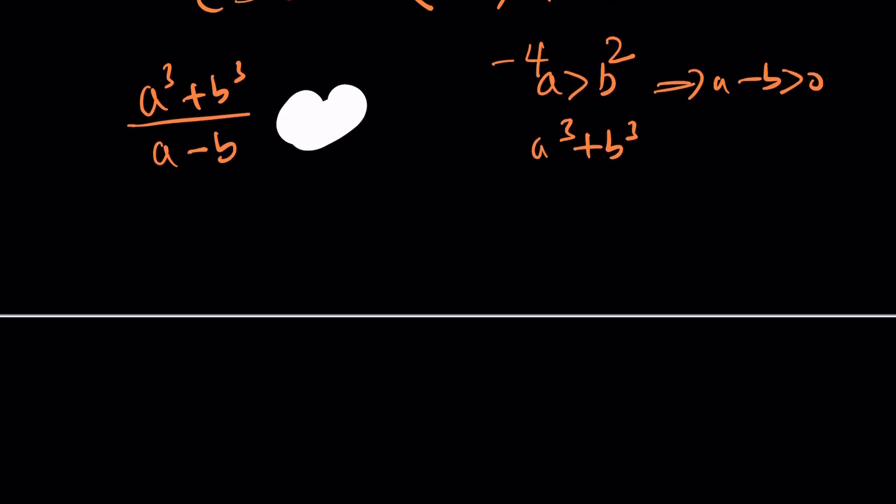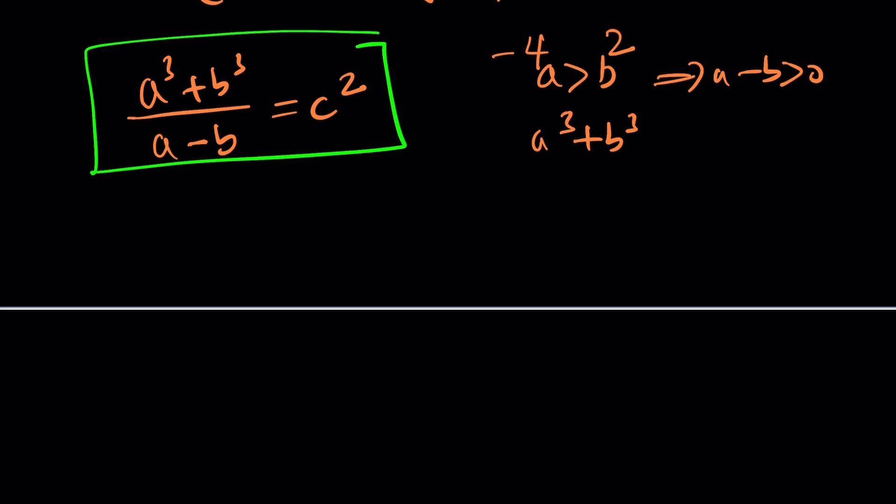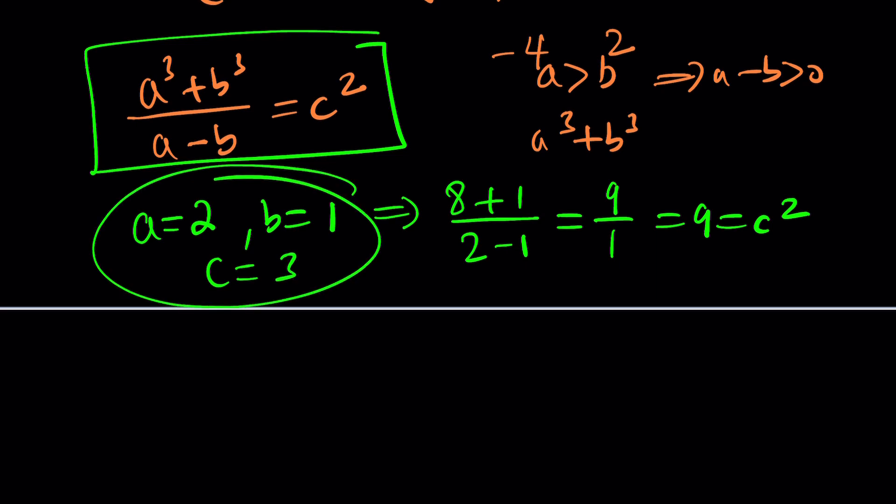And again, writing the equation in the original form. We're going to experiment. Suppose a is equal to two and b is equal to one. Notice that I do not want a and b to be equal. So, if you plug them in, a cubed 8 plus 1 divided by 2 minus 1, that's equal to 9 over 1, which is 9, which is c squared. Houston, we got a solution, which is c is equal to 3, not 0. Great.